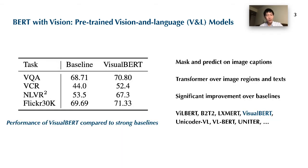These models — such as ViLBERT, LXMERT, our Visual BERT, and UNITER — have shown strong performance on various vision and language benchmarks. Here we show the performance of Visual BERT compared to previous strong baselines on four tasks: VQA, VCR, NLVR2, and Flickr 30K.